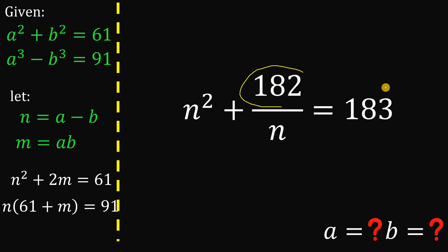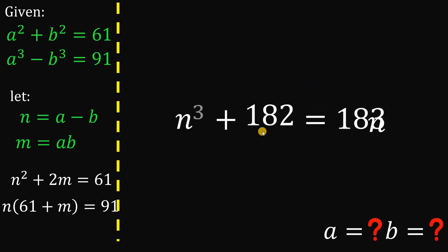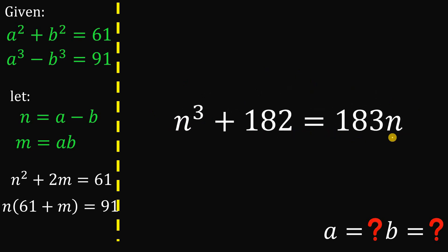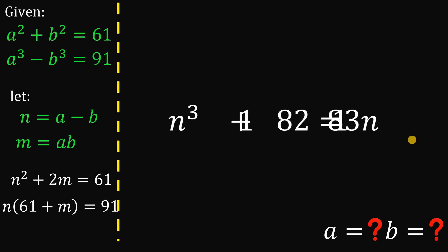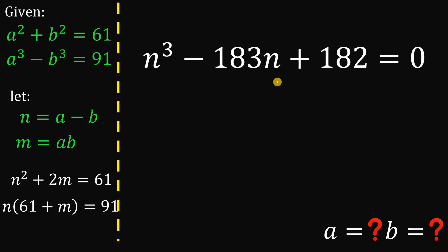Interestingly, we have 182 and 183 appearing. To remove the denominator, multiply all terms by n. This gives n cubed plus 182 equals 183n. Rearranging and setting equal to zero, we get the cubic equation: n cubed minus 183n plus 182 equals 0.